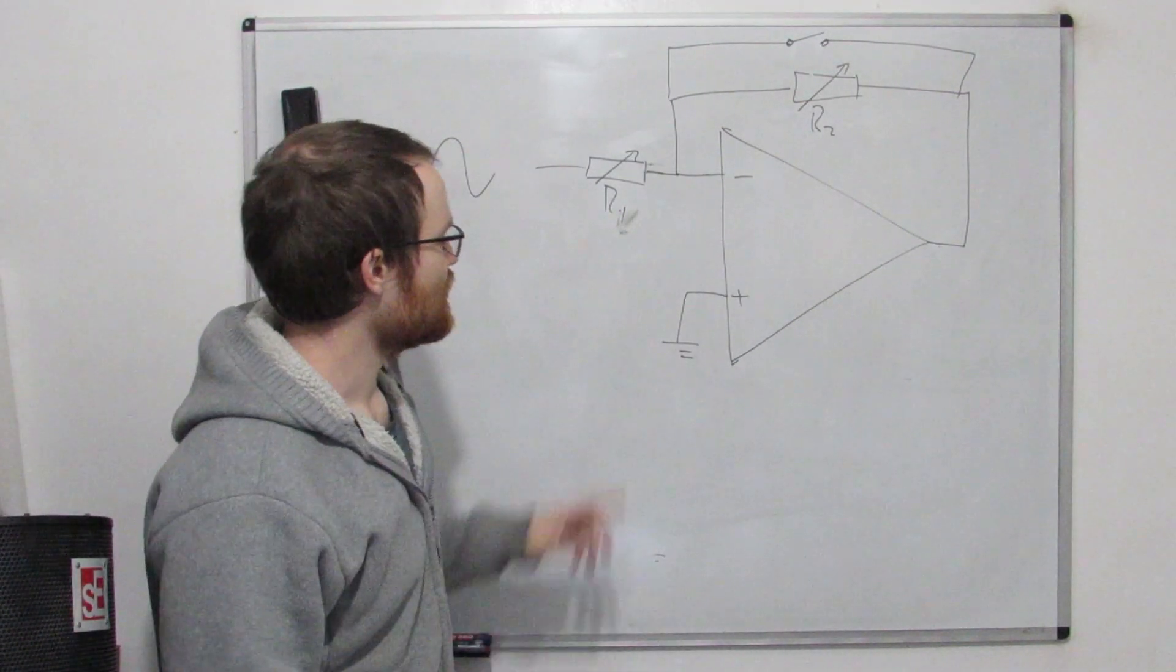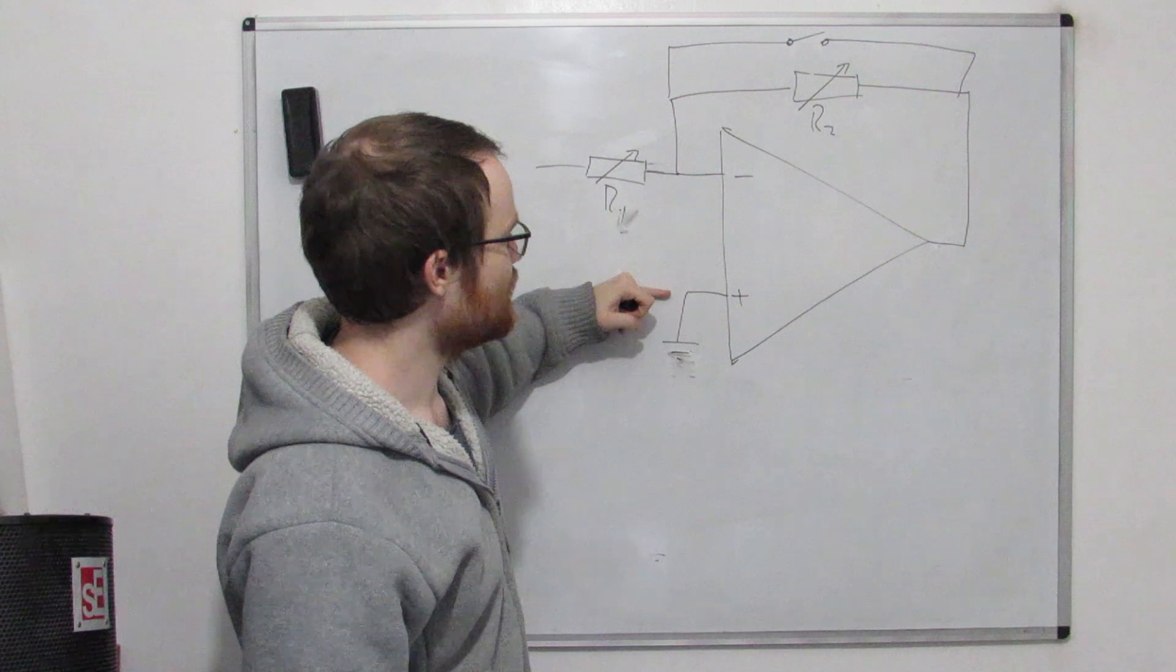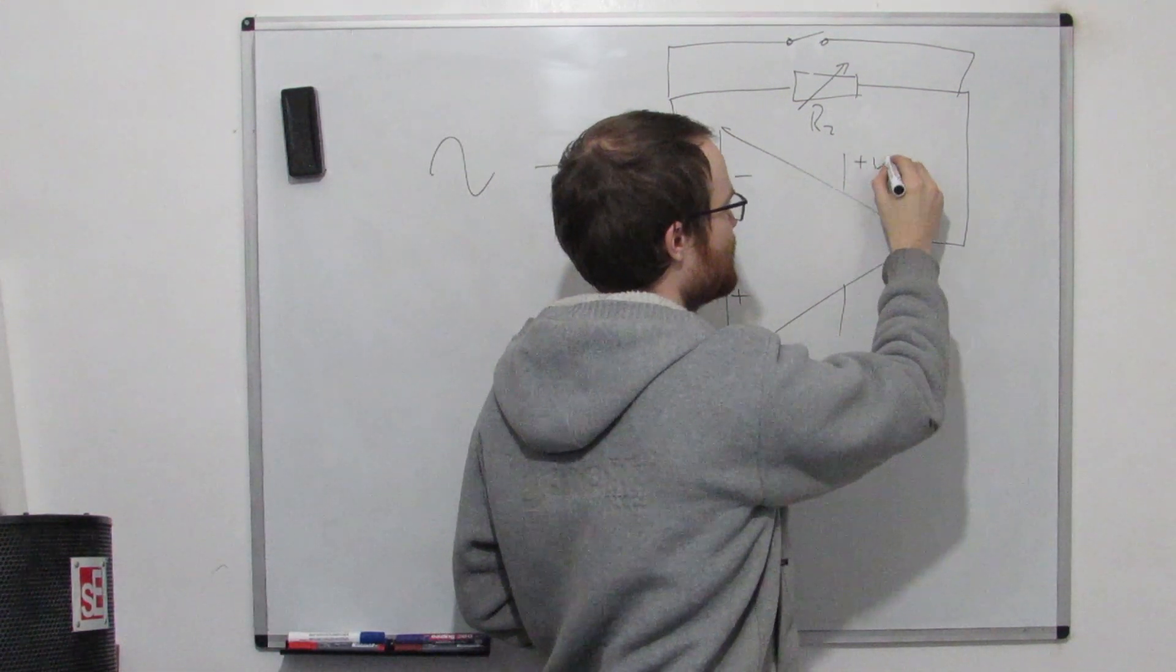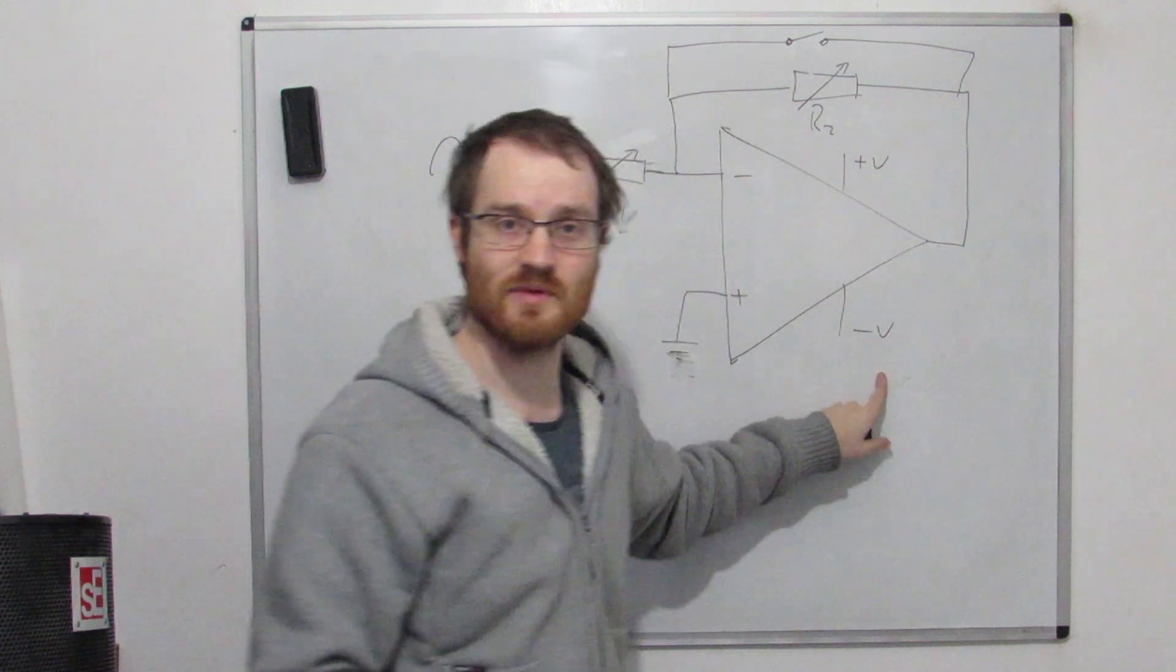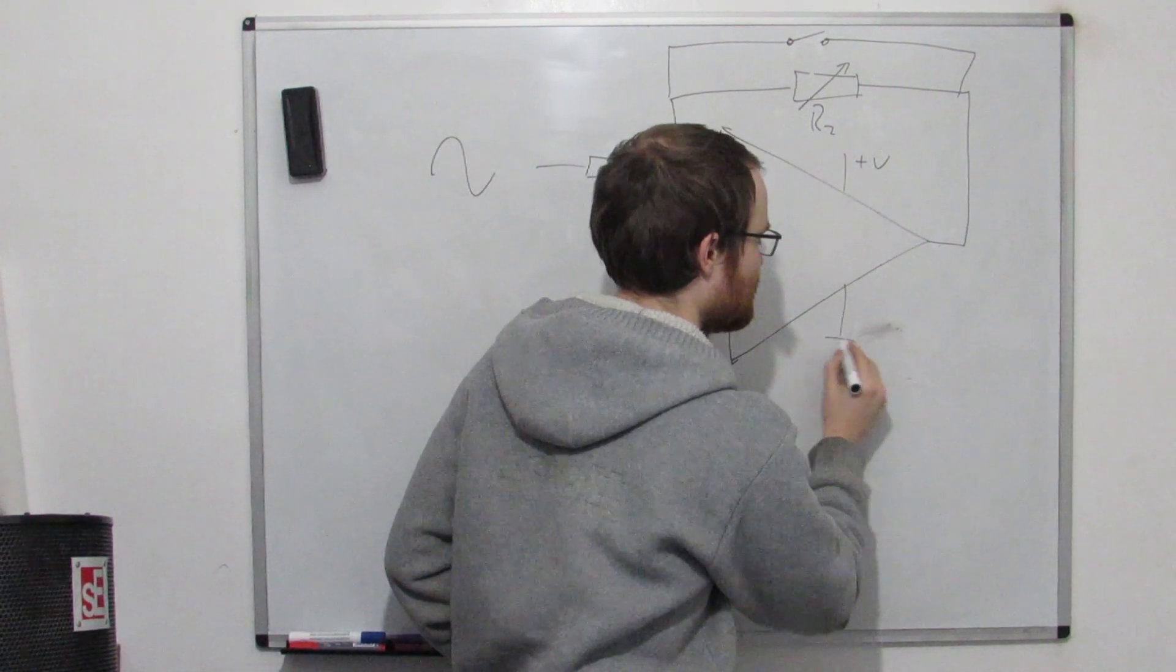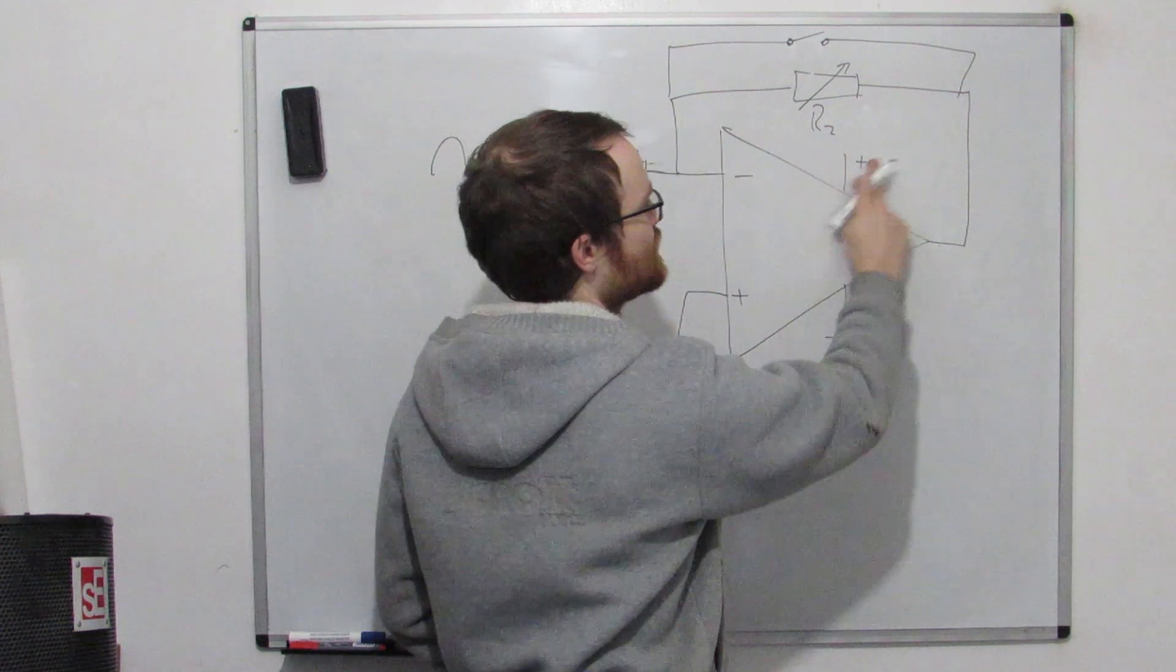Okay so now the last consideration we had to make, this is setting our midpoint. Usually you see an op-amp like this, but this is plus V and this is minus V if we have a split supply, but we've been using batteries. So this is going to be ground, the negative supply is going to be ground, this is going to be nine volts.